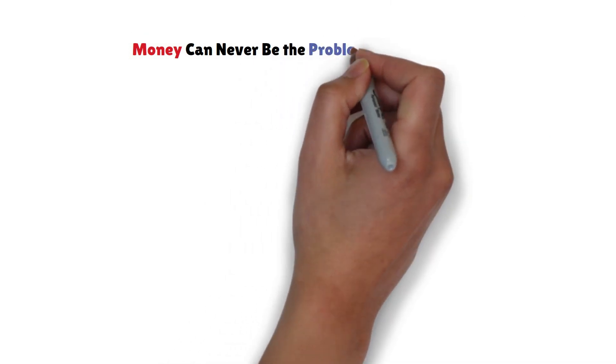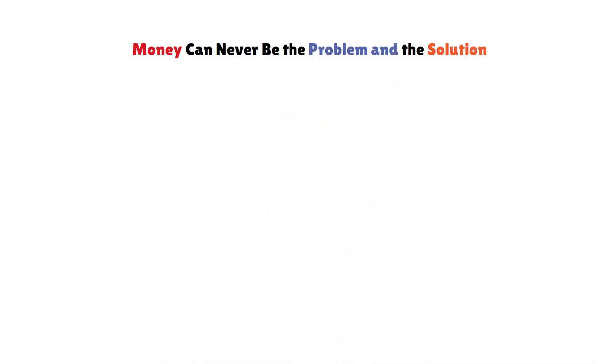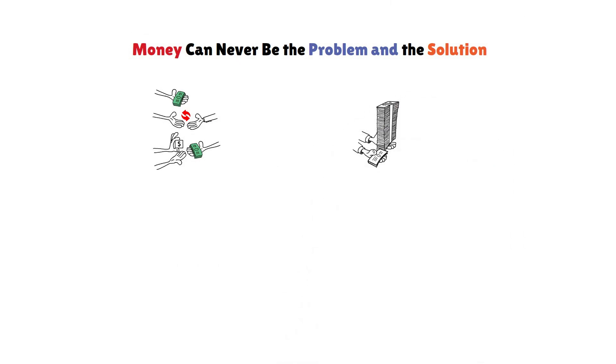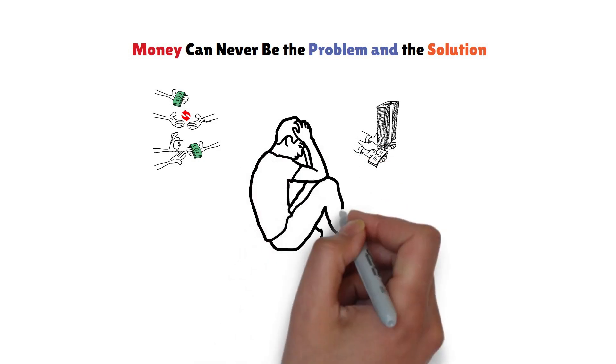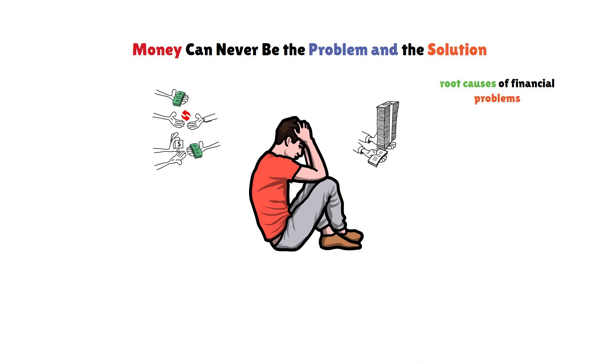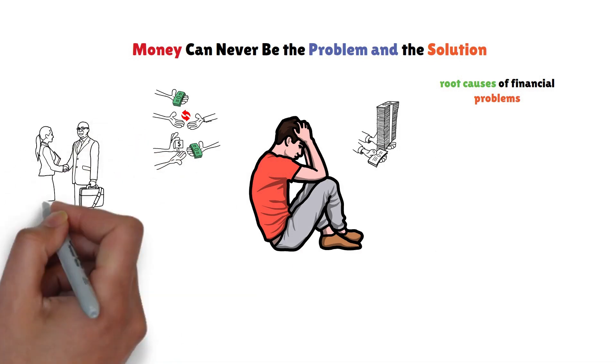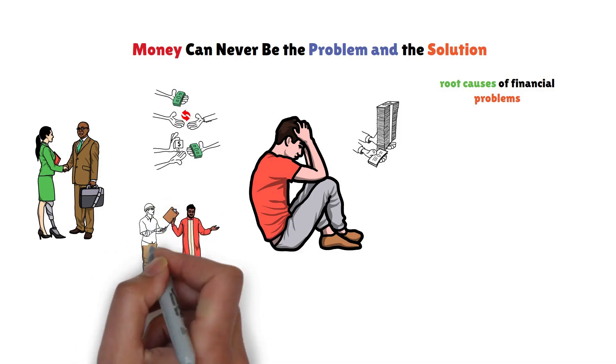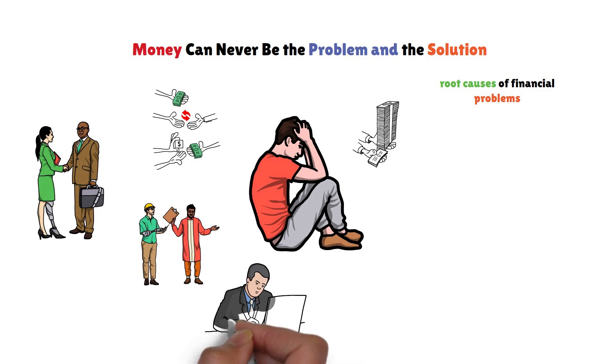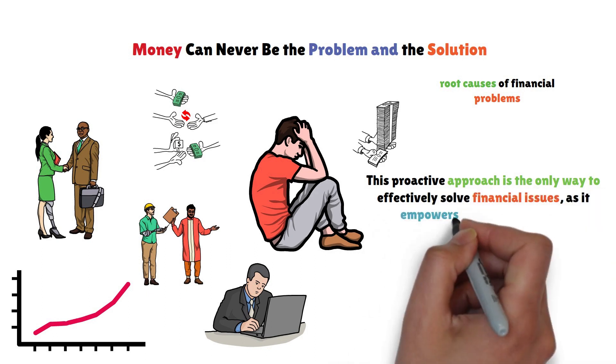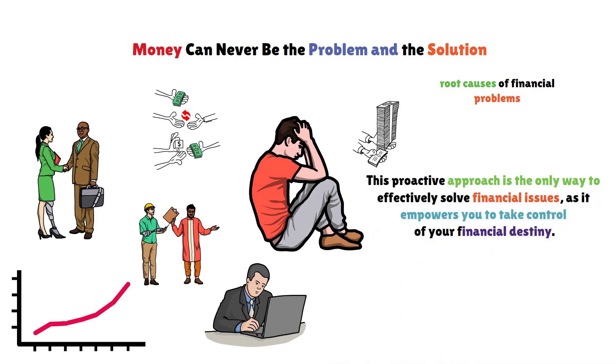Rule 12: Money can never be the problem and the solution. Many people fall into the trap of believing that borrowing more money will solve their financial issues, only to find themselves in a cycle of accumulating unmanageable debt. This approach doesn't address the root causes of financial problems. Instead, it's important to explore alternative sources of income. Consider finding a side hustle, taking on a second job, or even starting your own business to increase your income. This proactive approach is the only way to effectively solve financial issues, as it empowers you to take control of your financial destiny.